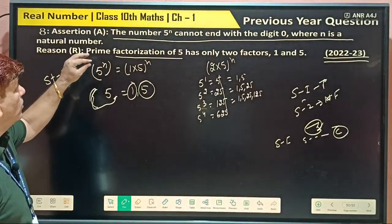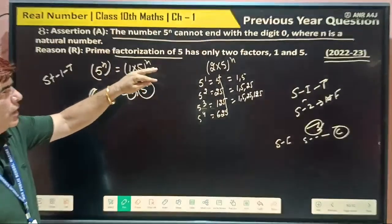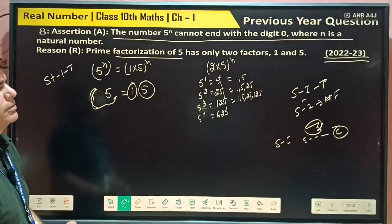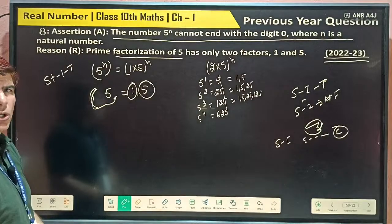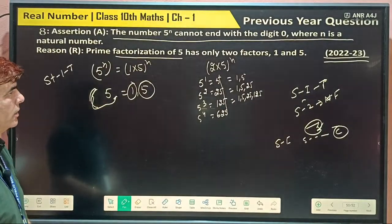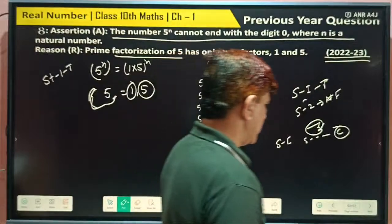And what's one more thing? Prime factorization of 5 has only 2 factors, 1 and 5. So here it does not contain 2. So definitely that. So you can understand this.